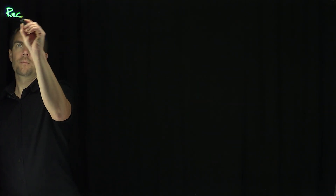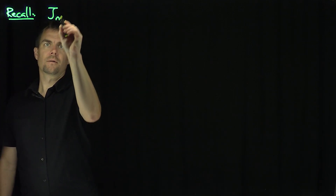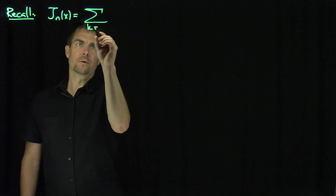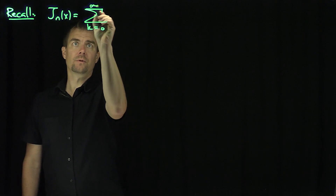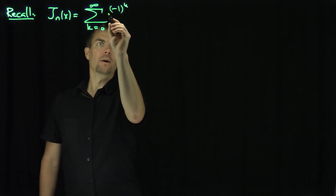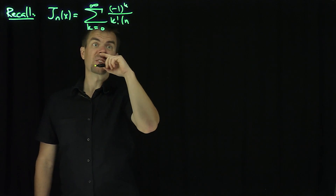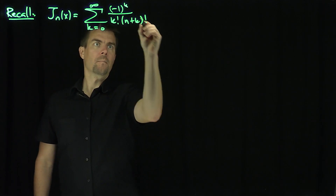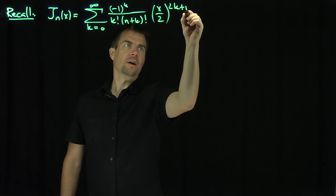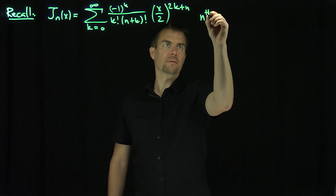Let's recall that j_n of x is the sum as k goes from 0 to infinity of negative 1 to the k, divided by k factorial times n plus k factorial, times x over 2 to the 2k plus n. That's the n-th Bessel function.